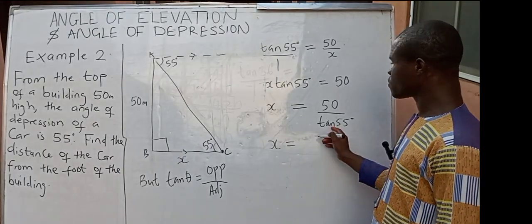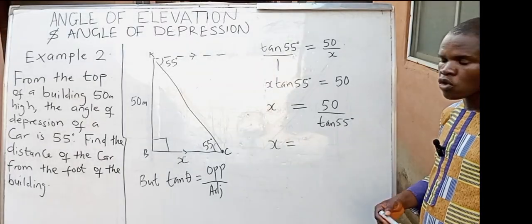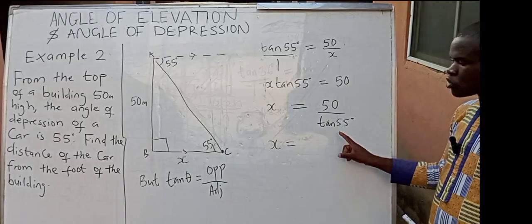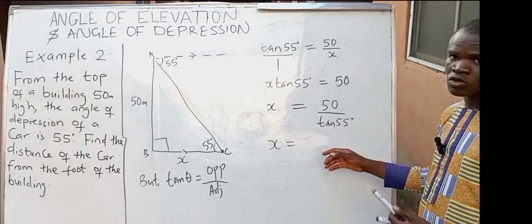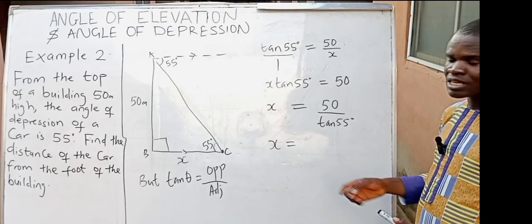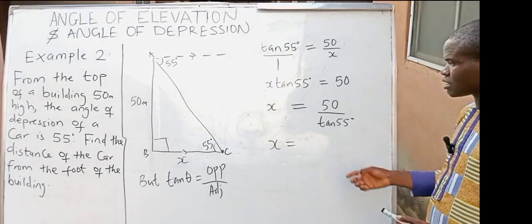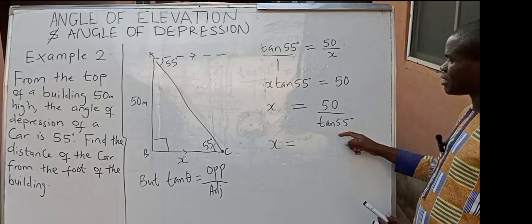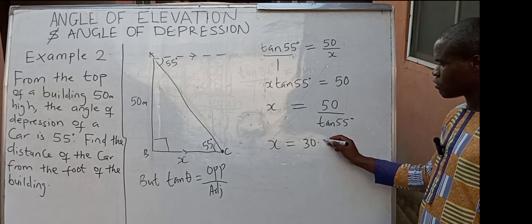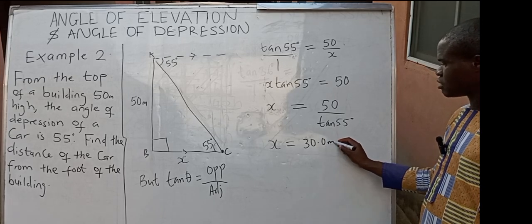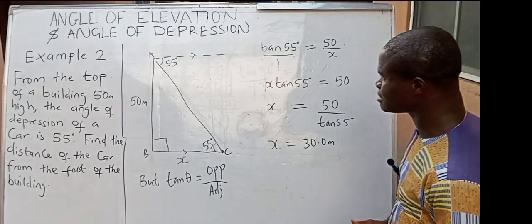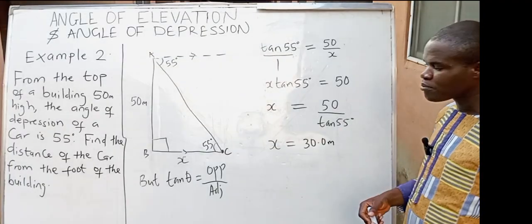X equals 50 divided by tan 55°. If you are using a calculator, just punch 50 divided by tan 55. If using the four-figure table, read up the value of 55 in your tangent table under angles in degrees, then use that value to divide 50. If you are using a calculator, just punch 50 divided by tan 55 — the answer is going to be 30.0 meters. So that means the distance between the car and the foot of the building is 30 meters.